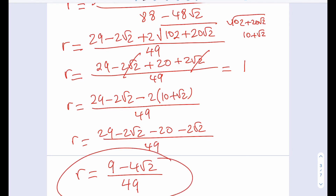You can check the validity of this solution: 4 root 2 is the square root of 32, which is a little less than 6, so roughly 5.5. Subtracting from 9 gives about 3.5, and dividing by 49 is approximately 0.07 — close to one tenth, which makes a lot of sense. So that's the radius of the green circle. Thank you for watching — if you have any ideas or suggestions, please comment. Don't forget to subscribe and like, and see you in the next video!